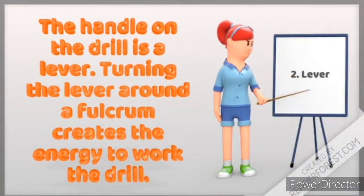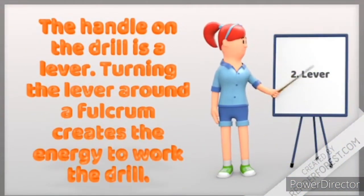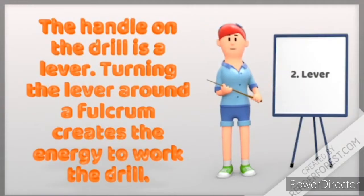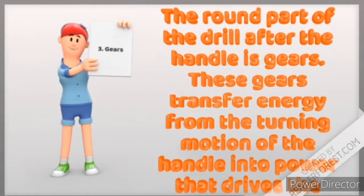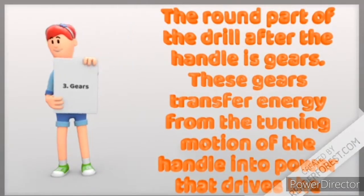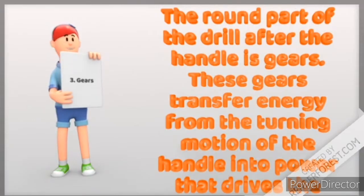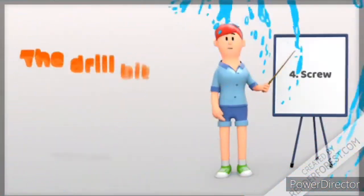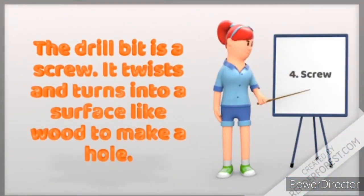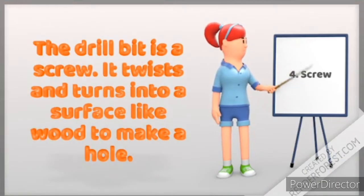Three, the round part of the drill after the handle is gears. These gears transfer energy from the turning motion of the handle into power that drives the drill bit. Four, the drill bit is a screw. It twists and turns into a surface like wood to make a hole.